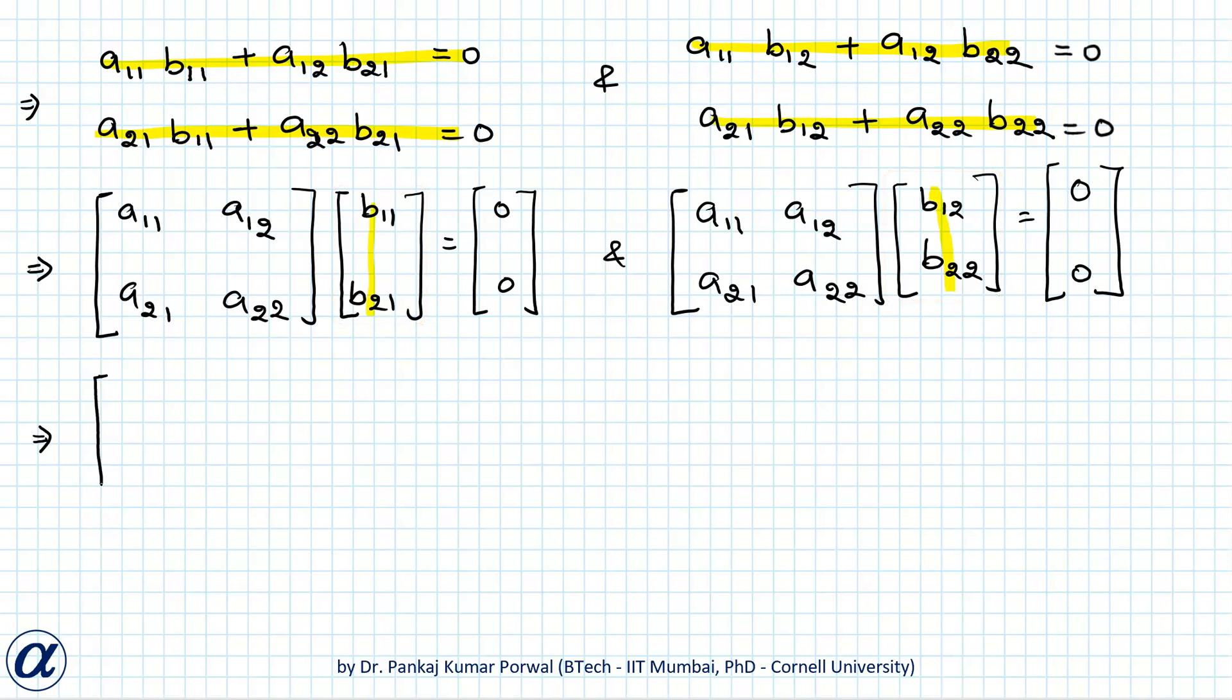So from these two we can conclude that if we have a homogeneous system of equations of the form a11, a12, a21, a22 into column vector consisting of x and y equals to zero zero, then this homogeneous system of equations has more than one non-trivial solution.